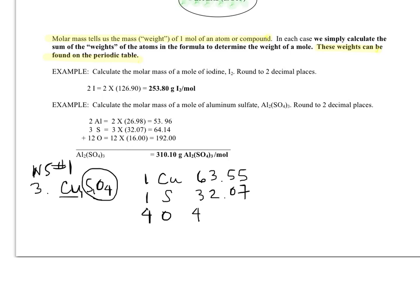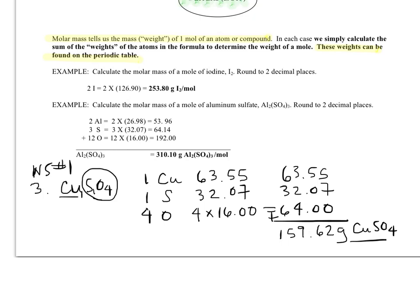Four oxygens each weigh 16. If you do your multiplication, 4 times 16, that's going to give you 64. Then what you need to add up is the 63.55, the weight of the one copper, the 32.07, the weight of the one sulfur, and the 64, which is the weight of the four oxygens. You add those all together, and you should get 159.62 grams of CuSO4 per mole. That is how much one mole of copper sulfate weighs. That's my final answer, so I will put a box around it.